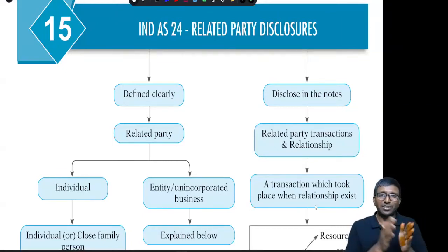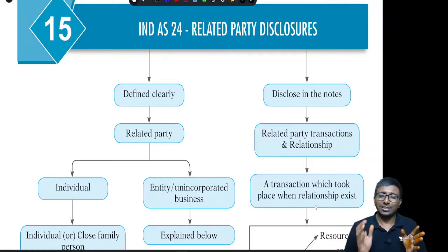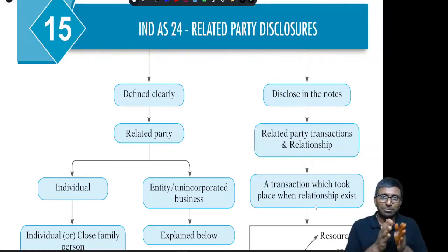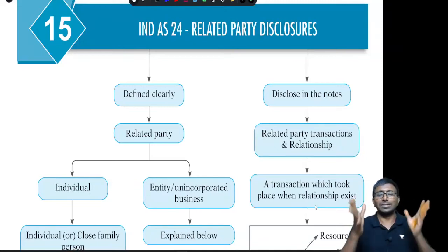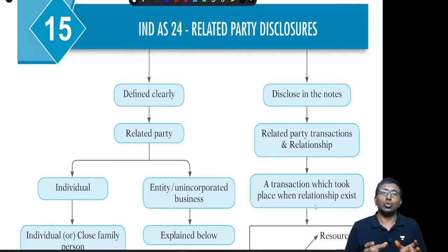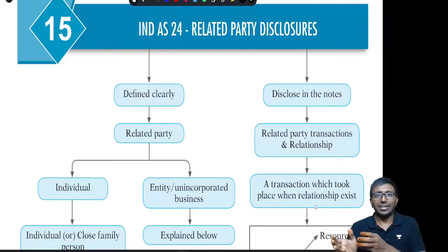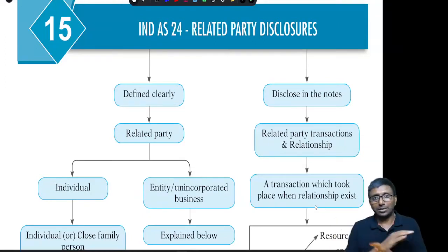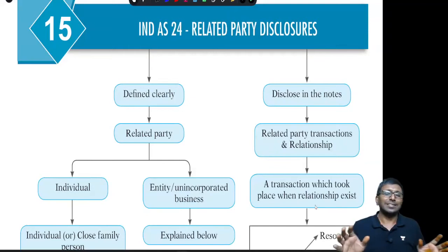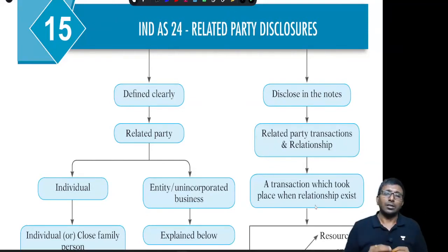Suppose the relation exists for three months within the year and afterwards the relation ceases. Within those three months, whatever transactions took place, only those transactions are going to be disclosed. If the transaction takes place after those three months — after the relation has ceased — then those transactions are not going to be disclosed.